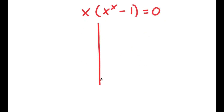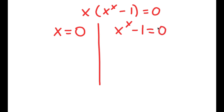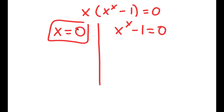This gives me two equations: x is equal to 0, and x to the power of x minus 1 is equal to 0. So x equals 0 is already a solution.